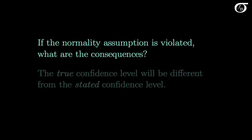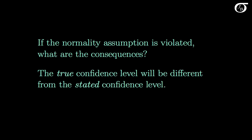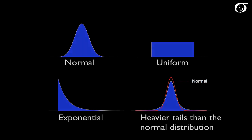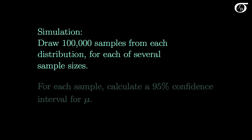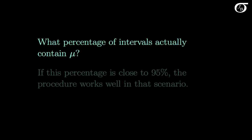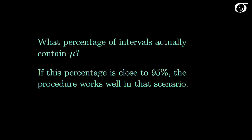If the normality assumption is violated, what are the consequences? The true confidence level will be different from the stated confidence level. We're going to simulate samples from four different distributions. One of them is the normal distribution, so the normality assumption will be perfectly justified. The other three have deviations from normality, and we're going to investigate the effect of those deviations on our confidence level. In this simulation I'm going to draw 100,000 samples from each distribution for each of several different sample sizes, calculate a 95% confidence interval for the population mean mu, and ask what percentage of these intervals actually contain mu. If this percentage is close to 95%, the procedure works well in that scenario.